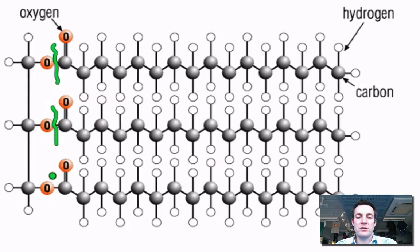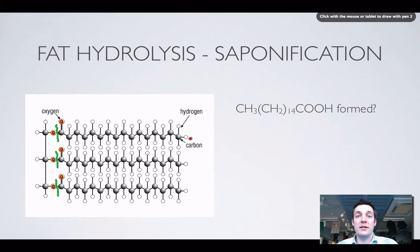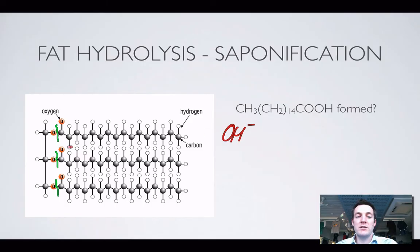When we hydrolyze a fat we'll break the ester bonds, put hydrogens back on the alcohol, and put the OH groups back on the carboxylic acids. To do this reaction we need hydroxide ions, as we saw in the ester hydrolysis film. But there are three ester groups here, so we'll need three hydroxide ions to hydrolyze one fat molecule.